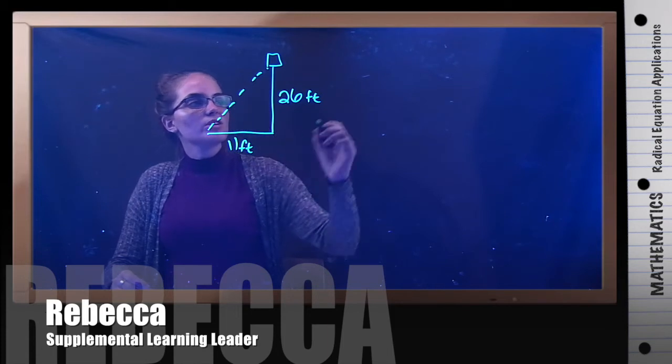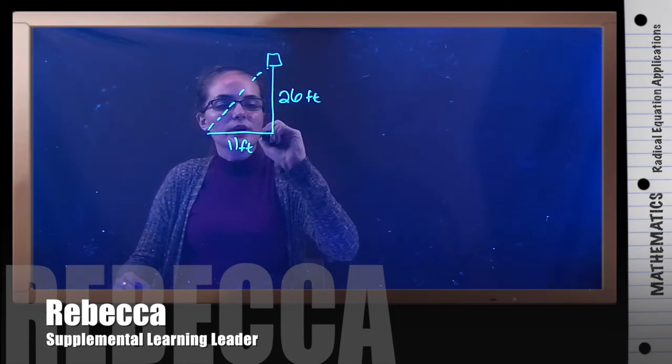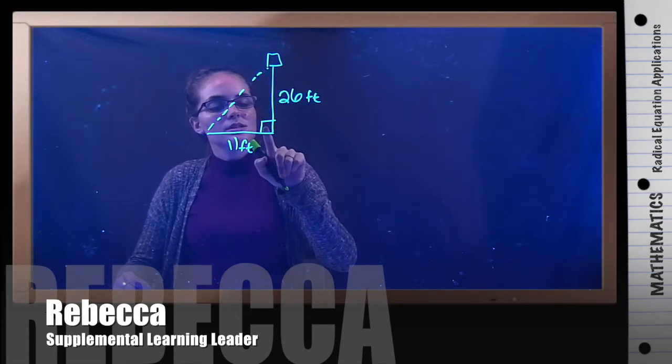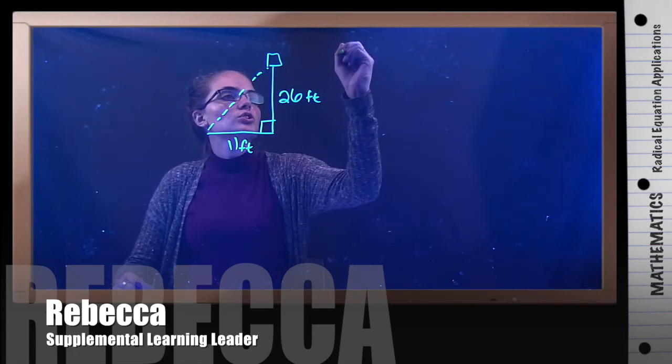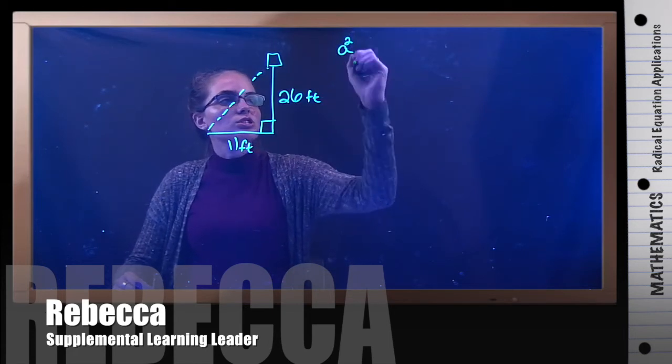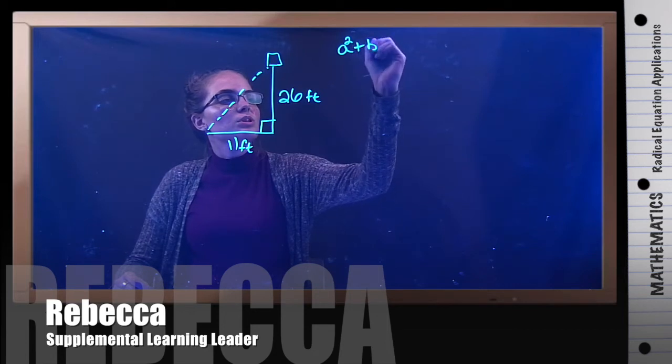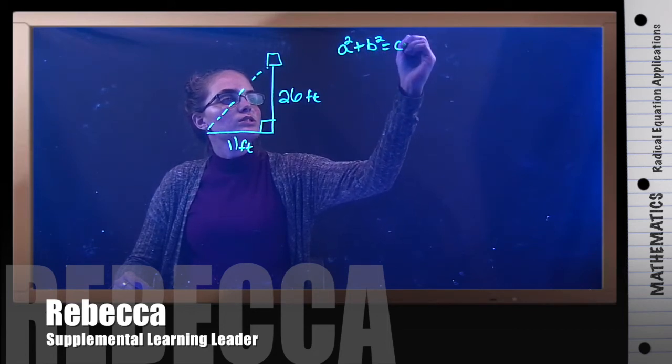So what we can remember is that if you have a right triangle, which this is because this is a 90-degree angle, you can use the Pythagorean theorem, which is a² + b² = c².